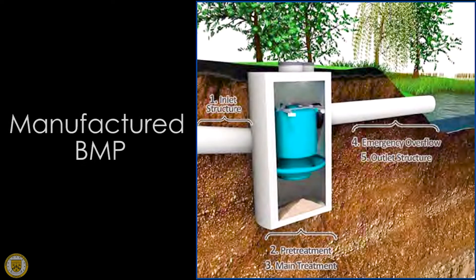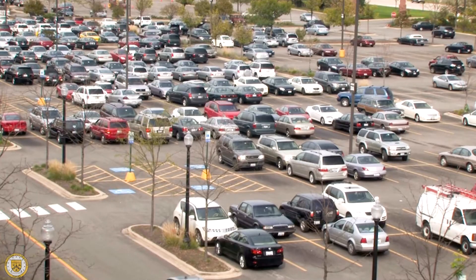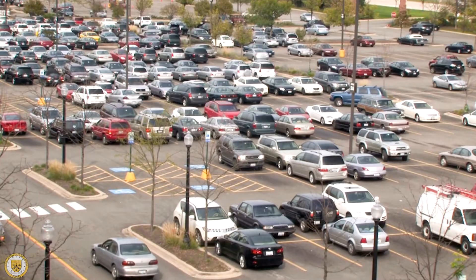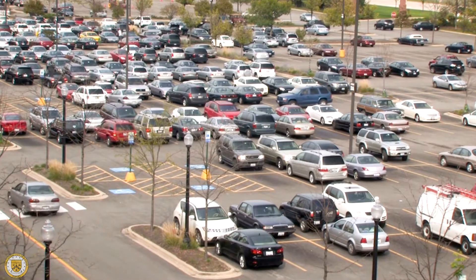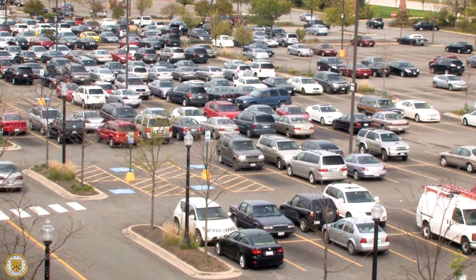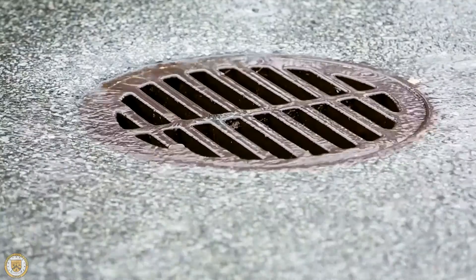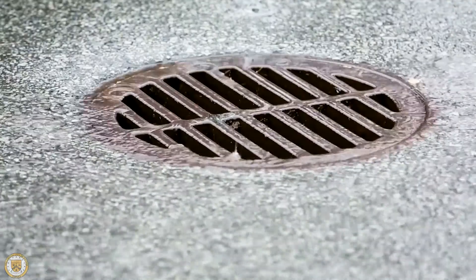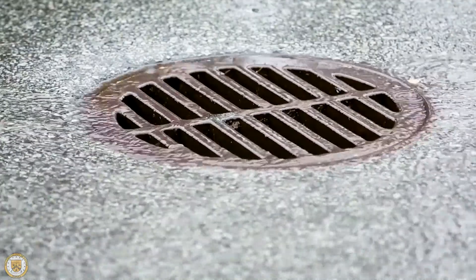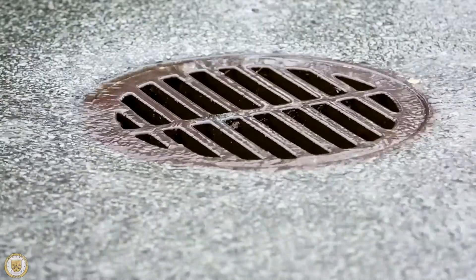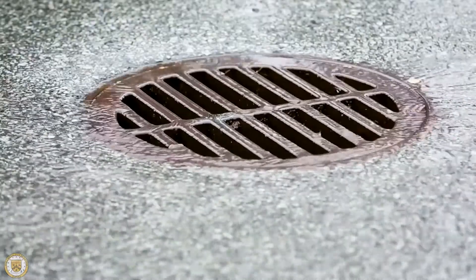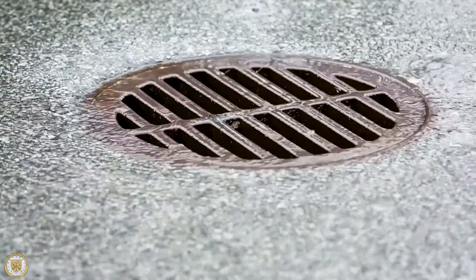Manufactured BMPs are designed to remove pollutants from stormwater by filter or mechanical means before the water is released. These BMPs are typically located underground near or in a stormwater inlet or under a manhole cover. While manufactured BMPs are out of sight, they require significantly more maintenance than the other types of BMPs.